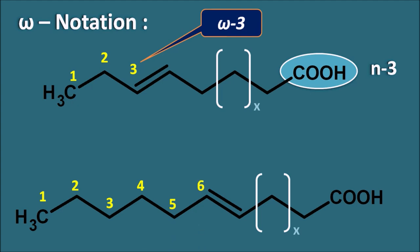Now, for another fatty acid, when we give the numbering from the other terminal — 1, 2, 3, 4, 5, 6 — the first double bond is present at the sixth position. So this is an omega-6 fatty acid, which can also be denoted as n-6. If n equals 18, then 18 minus 6 equals 12 — the first double bond from the other terminal is at the 12th carbon. In this way, fatty acids can be denoted as omega-3 or omega-6. In this video, we are going to discuss omega-3 fatty acids.